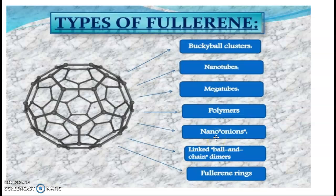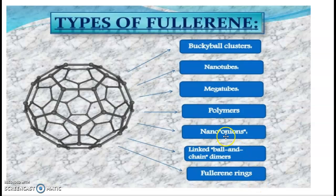Next we will discuss the types of fullerenes: Buckyball clusters, nanotubes, megatubes, polymers, nano-onions, linked ball-and-chain dimers, and fullerene rings.